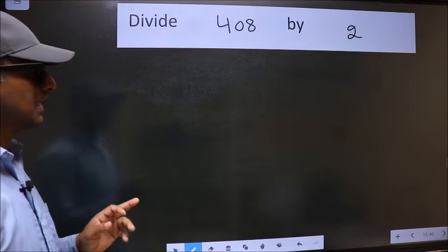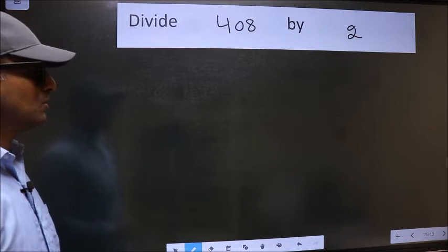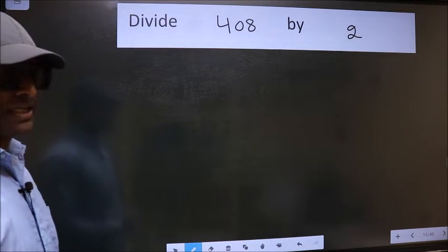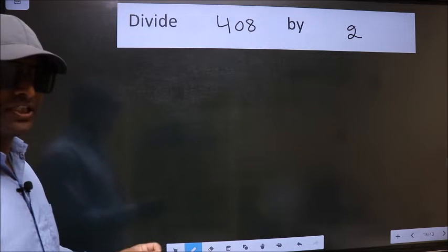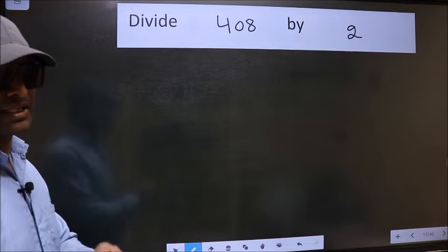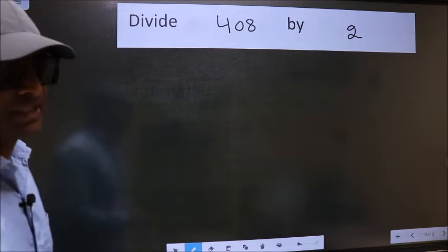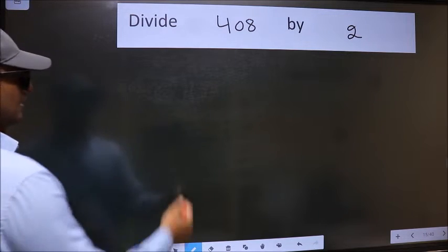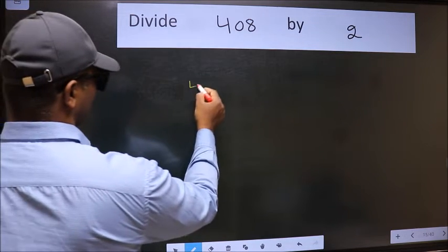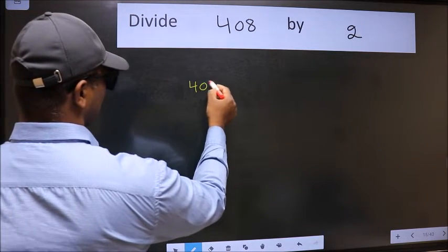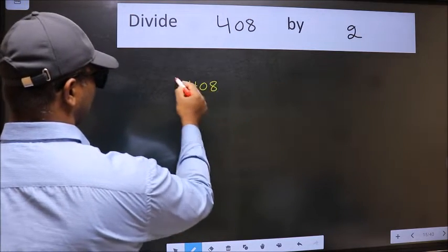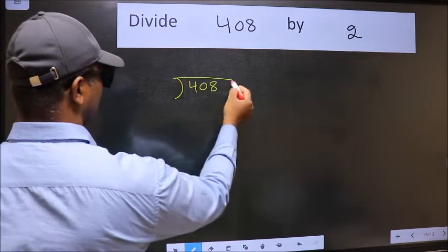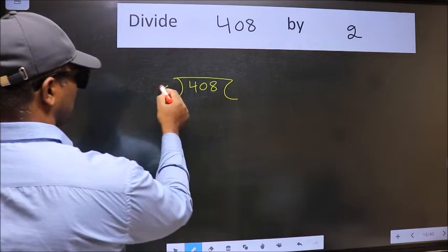Divide 408 by 2. To divide this, we should frame it in this way. 408 and 2 here.